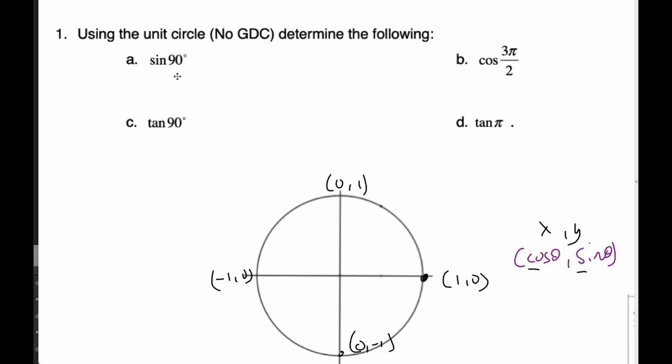And so if I'm going to find the sine of 90 degrees, well, 90 degrees is here. Sine, I know, is the Y value. So sine of 90 is going to be 1.